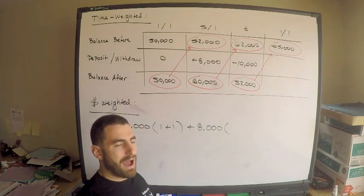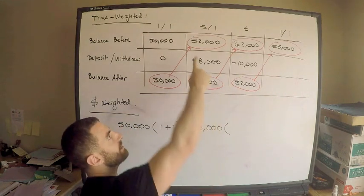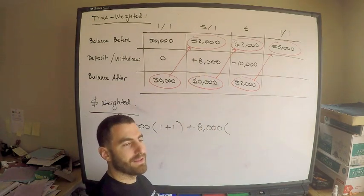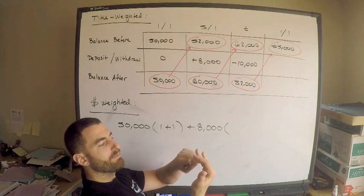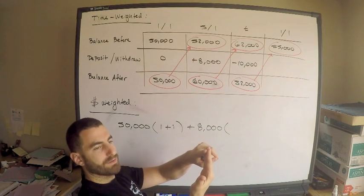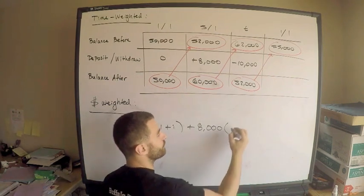I have a deposit of $8,000. How long does $8,000 stay in my account? How many months am I accumulating $8,000? It's deposited at the beginning of May, so that means it accumulates eight months.